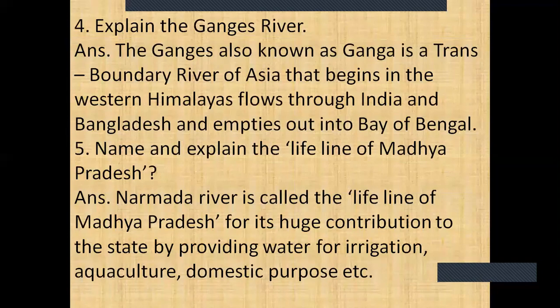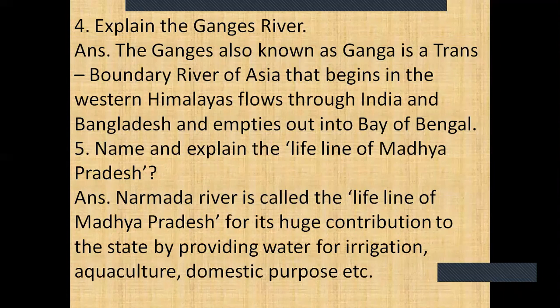Question 4: Explain the Ganges River. The Ganges, also known as Ganga, is a trans-boundary river of Asia that begins in the western Himalayas, flows through India and Bangladesh, and empties into the Bay of Bengal. Question 5: Name and explain the lifeline of Madhya Pradesh. Narmada River is called the lifeline of Madhya Pradesh for its huge contribution to the state by providing water for irrigation, aquaculture, domestic purposes, etc.